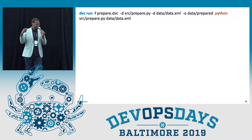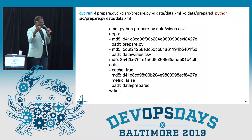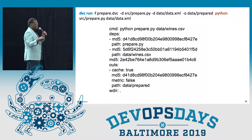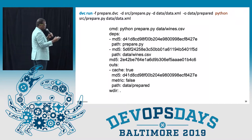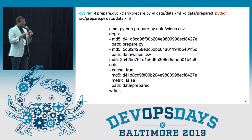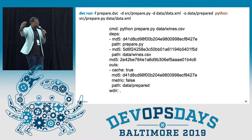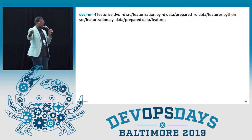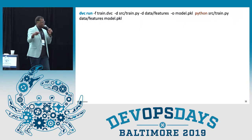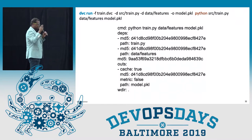DVC uses something called a DVC file, similar to a git file, that encapsulates what happens each time you go through a pipeline. In this example, it's creating a training pipeline with a prepare step — so when the data gets there, you want to prepare it: get rid of outliers, normalize some features, and handle null values you don't want in your training set. Similarly, the training pipeline has a similar function — you can set command line interfaces for what happens when you want to train and create a model, with inputs that produce a result.